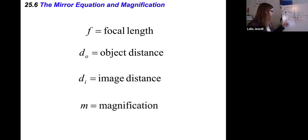d_o is the object distance, the distance from where the object is to the mirror. d_i is the image distance, from the mirror to the image itself. And finally, lowercase m is our magnification. Those are all useful things to keep in mind.